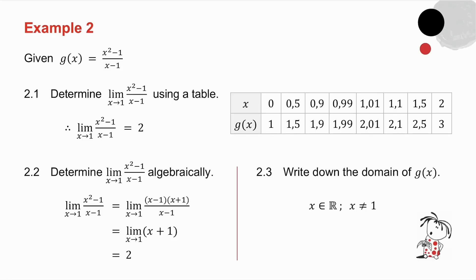The second question I ask you to determine the limit algebraically. You will notice that this is difference of two squares. So I factorize it. The x minus 1 cancels. And this is exactly the same as the limit as x tends to 1 of x plus 1. And as I make x closer and closer to 1, my answer becomes 2.